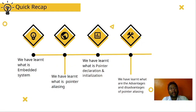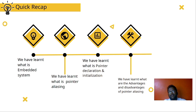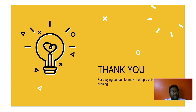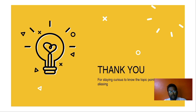Let's have a quick recap of what we have learned in this video. We learned what embedded systems are, what pointer aliasing is, the differences between pointer declaration and initialization, and the advantages and disadvantages of pointer aliasing. This brings us to the end of the video. We hope you found it informative and helpful. If you have any questions or want us to cover more programming topics, let us know in the comments below. Don't forget to like the video and subscribe to our channel for more exciting content. Thanks for watching and we'll see you in the next one!